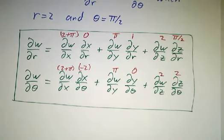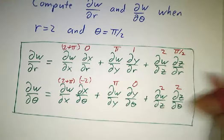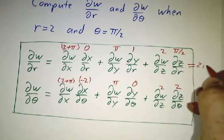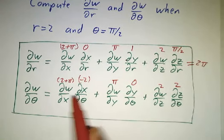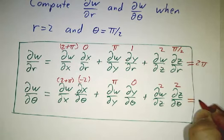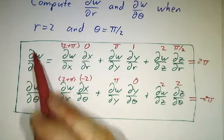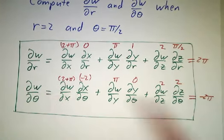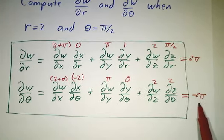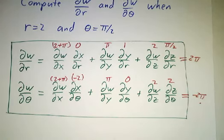Now we just add things up. We've got π + π, which gives us 2π. Here we have -4 - 2π + 4, which gives us -2π. So ∂w/∂r = 2π and ∂w/∂θ = -2π. All we had to do was compute all of the terms and plug them in.